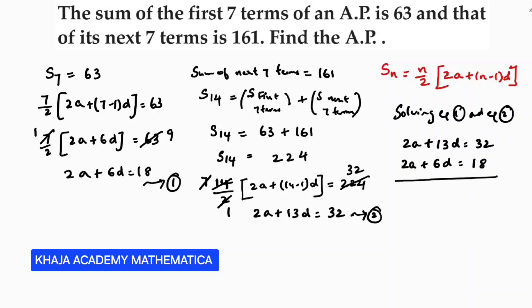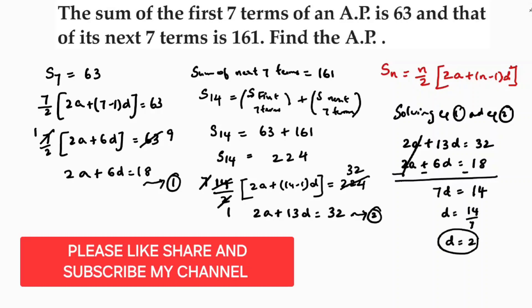Solving equation 1 and equation 2. If I will subtract, 2a, 2a will get cancelled. 13 minus 6 which is 7d, 32 minus 18 is 14. So d is 14 by 7. The value of d is 2.